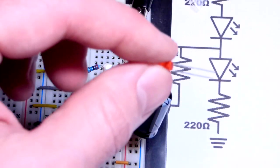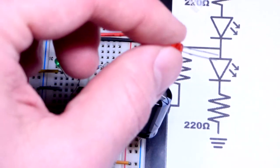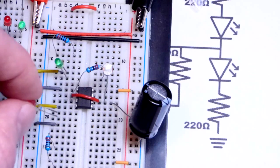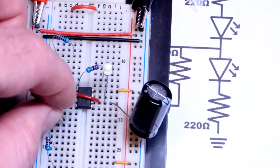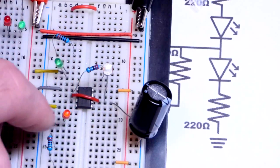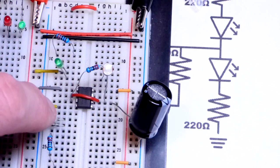But the main thing is the short lead, the cathode, heads towards the ground. Long lead, the anode, towards the output. So I'm putting the short lead, the cathode, to that gray jumper right there.